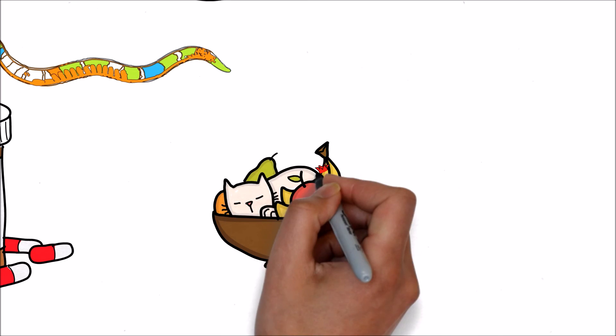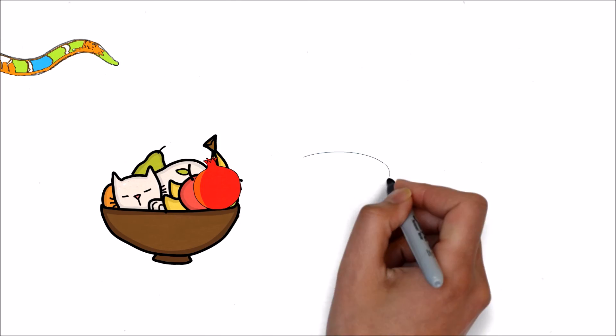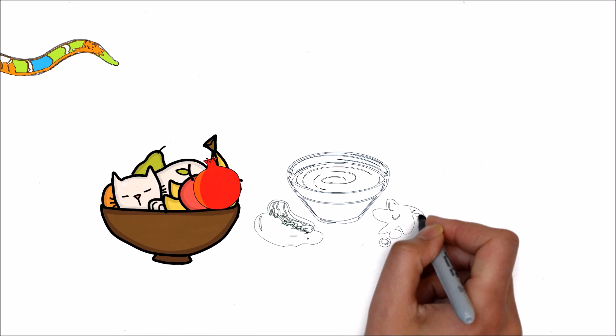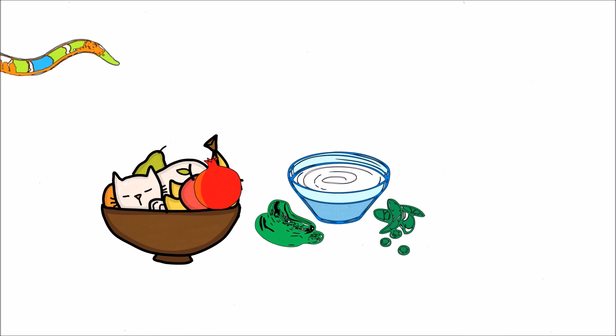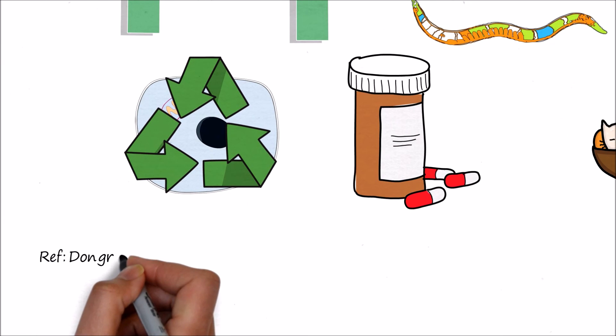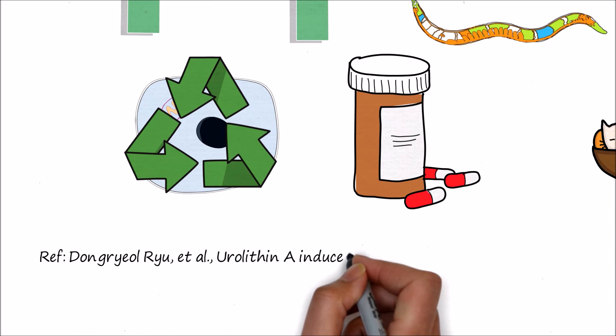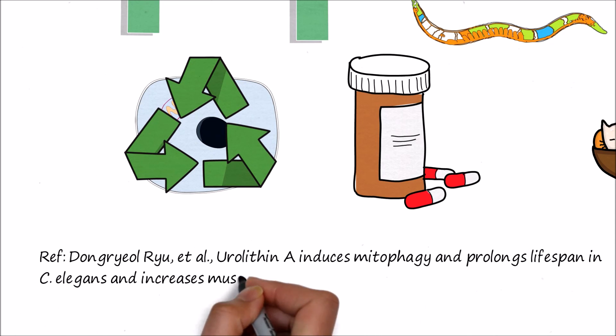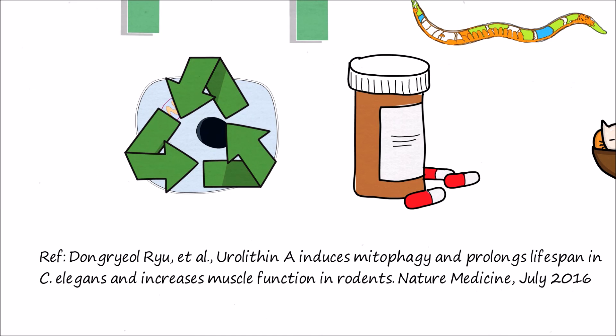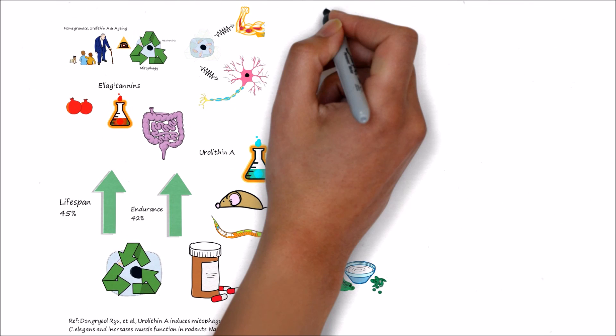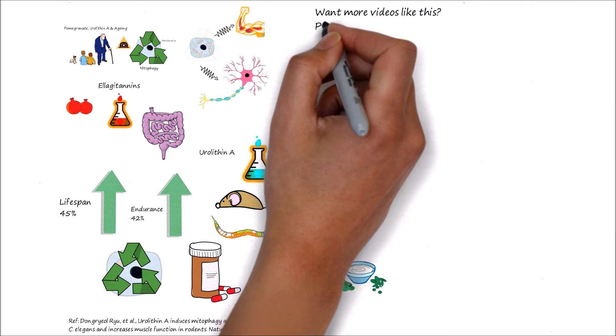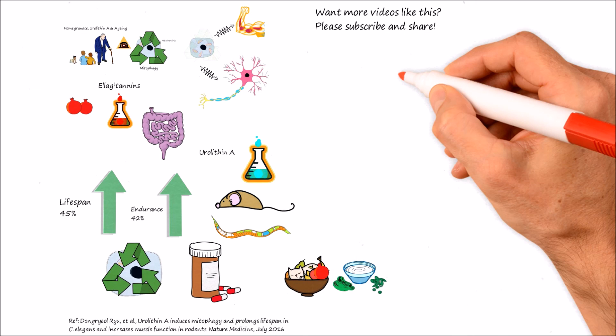In the meantime, keep eating your pomegranates and probiotics. Very important probiotics. You cannot benefit from pomegranate unless you have good gut bacteria because you need the gut bacteria to convert elagitanin to urolithin A. So if you want to live longer, just eat fruits and probiotics regularly.